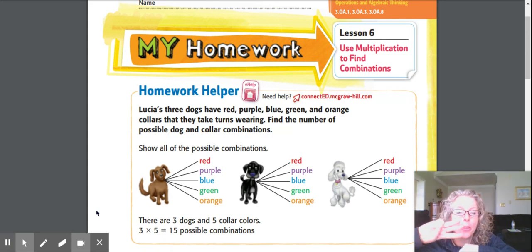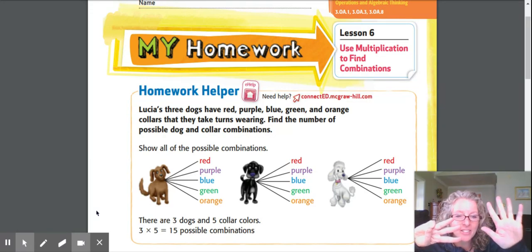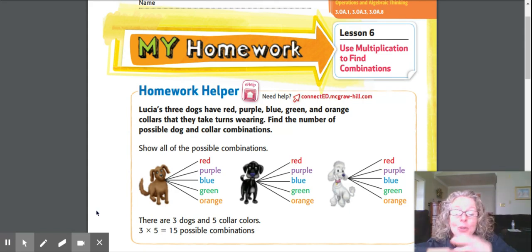So just like I hinted at the making a table, I could take the three dogs and multiply that by the five colors and I get 15. Sometimes you can go ahead and do the work, show your work, do the long part, but the easy, super easy way to check your work is to use multiplication to find those combinations.